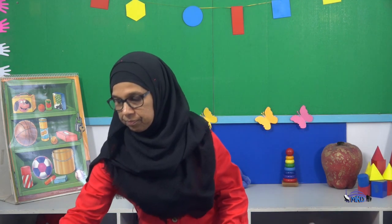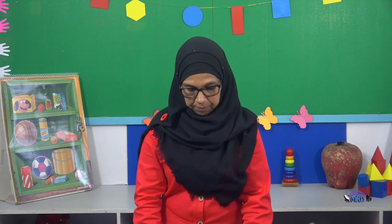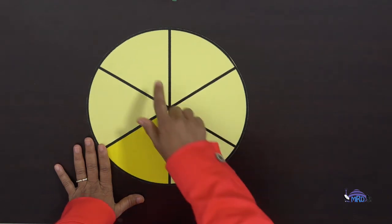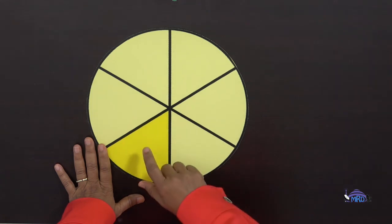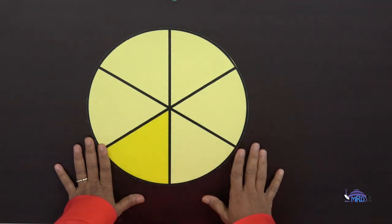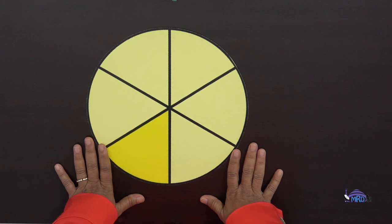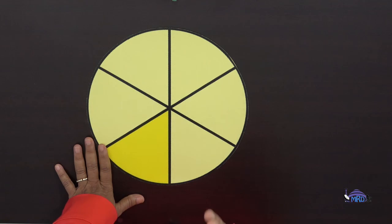Let's look at another shape — another circle. Does it show fourths or quarters? One, two, three, four, five, six pieces — six equal pieces. Does it show fourths or quarters? No, it does not. For it to be fourths or quarters, please remember that it must be separated into four equal pieces or parts.